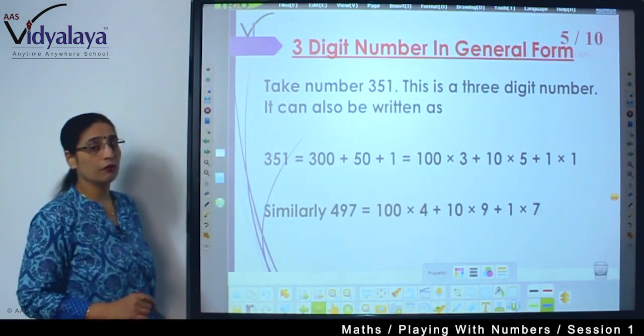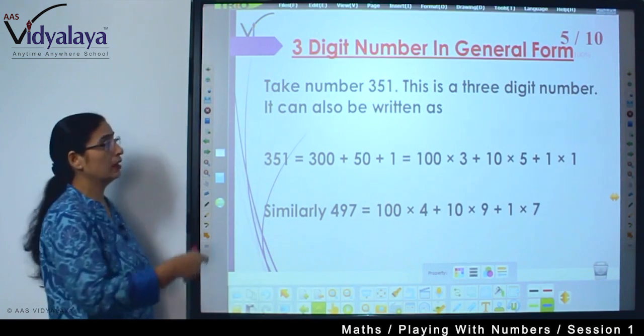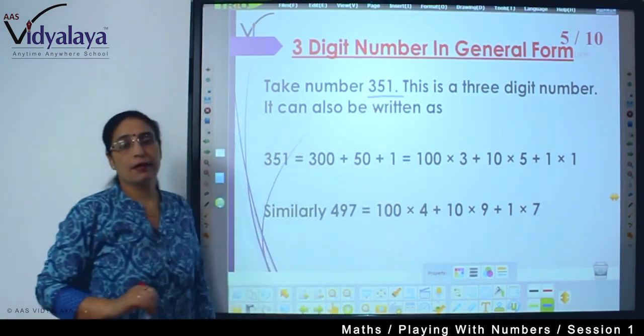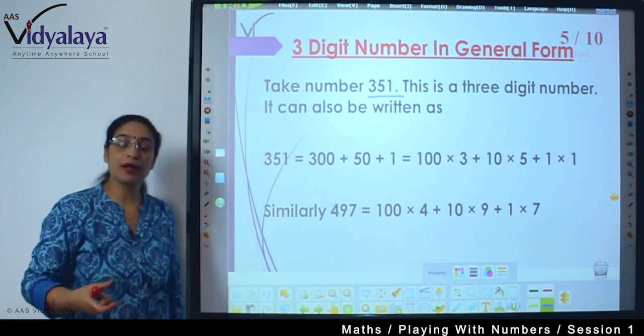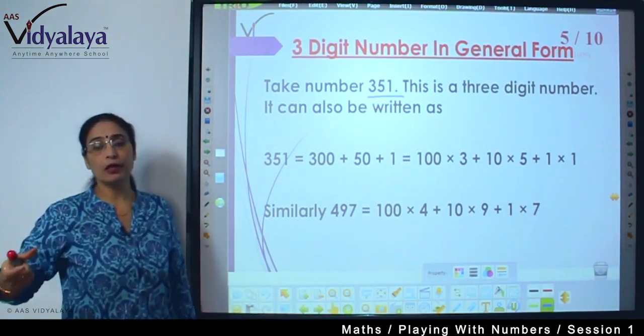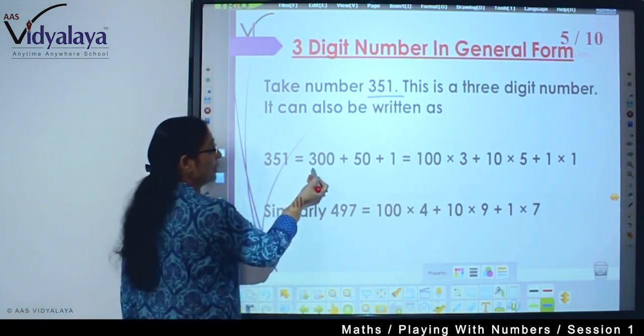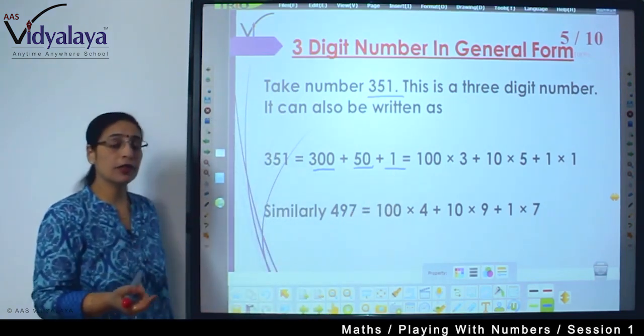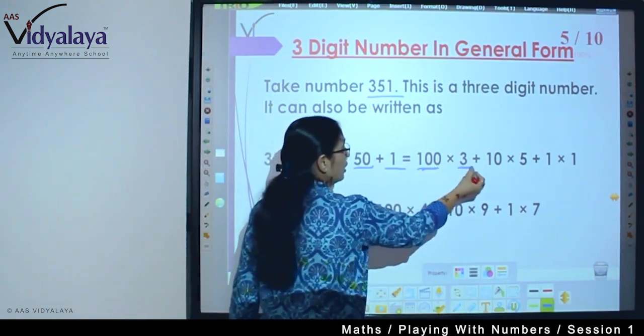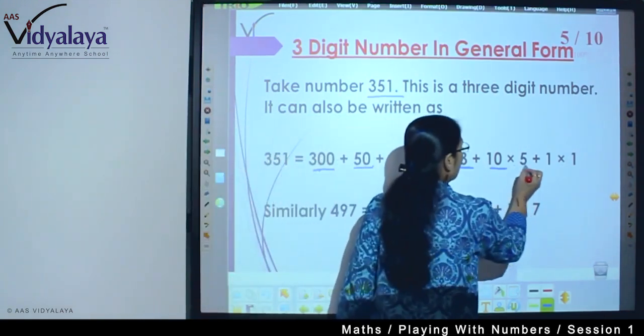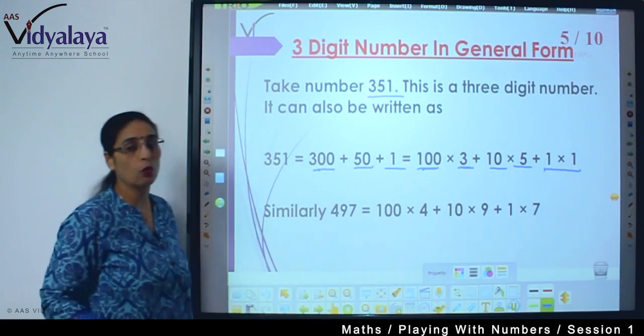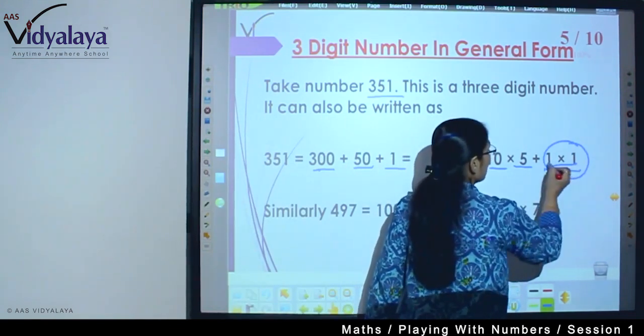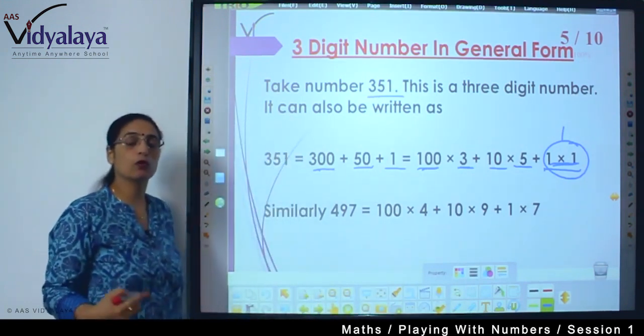Now three digit number in general form. The same way as we have seen two digit number, we can do with the three digit number. Suppose a three digit number is 351. I am speaking this number with the place value: three hundred fifty one. So 351 can be written 300 plus 50 plus 1. Now 300 can be further written: its place value is hundred, so hundred into 3. 5's place value is 10, so 10 into 5, and 1's place value is 1, so 1 into 1. Sometimes in many books you will not find this 1 into 1, they write simply 1 because 1 into 1 is 1.